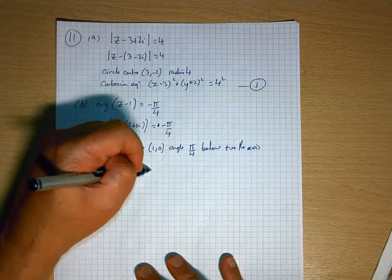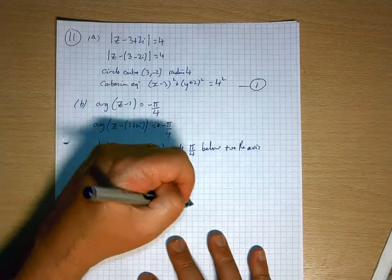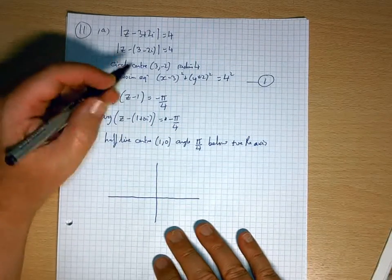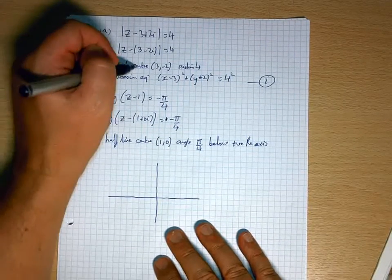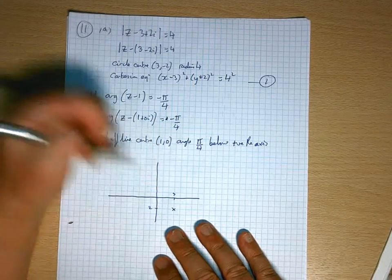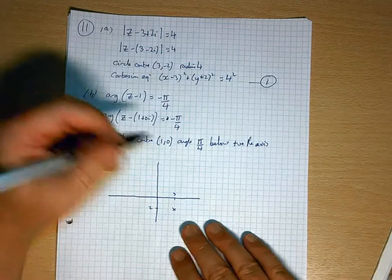Right, let's do a little sketch. I love sketching these circles. Right, so I've got a Cartesian circle, centre 3, minus 2, radius 4.